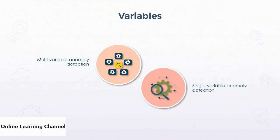Single-variable anomaly detectors are more vulnerable to outliers than a multi-variable system, because both the mean and subsequently the standard deviation of the metric being monitored get calculated over the time series window. Any anomalies that happen after an outlier could be categorized as normal.